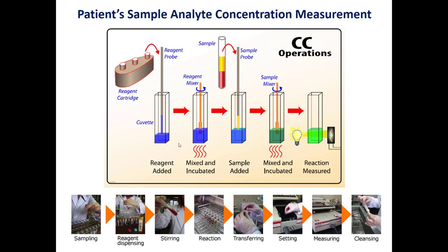To summarize: firstly we add the reagents and mix them to have a homogeneous content. We incubate the reagent at 37 degrees, which is the temperature of our core body. Then we add the sample, make mixing and incubation, and finally measure the absorbance. These are the steps in order to measure an analyte concentration.